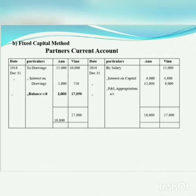Next is the partners' current account. The format is the same as the capital account. The current account records: salary, interest on capital, drawings, interest on drawings, and the profit and loss appropriation account balance. These items which change every year are recorded in the current account, keeping the capital account fixed.